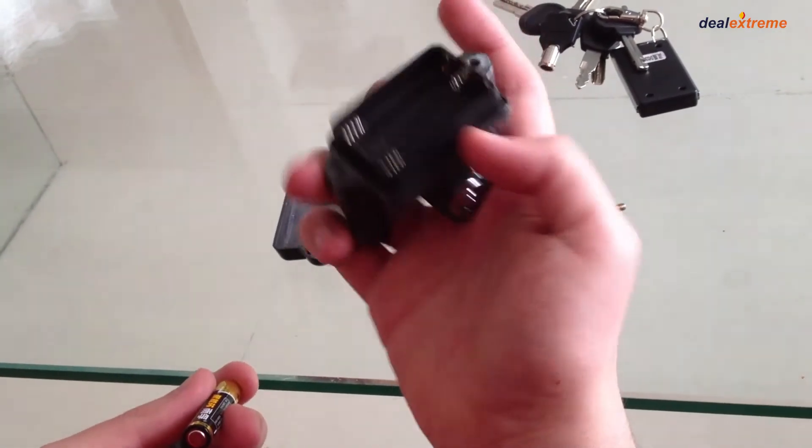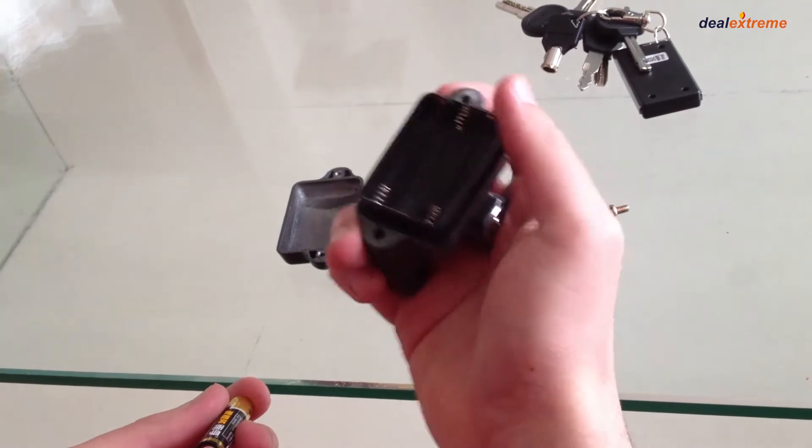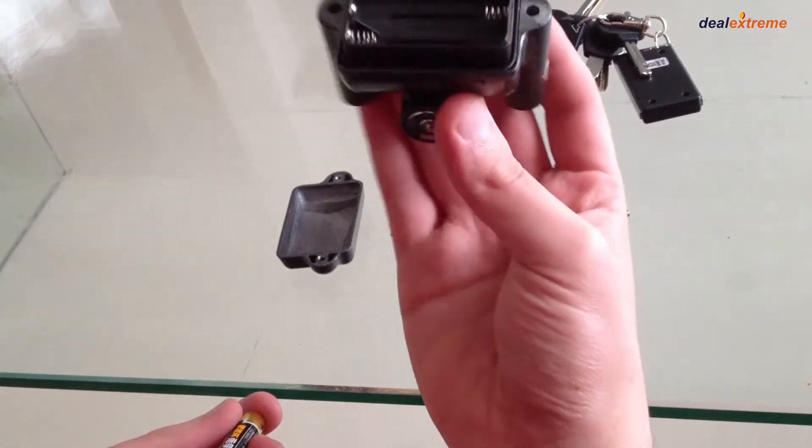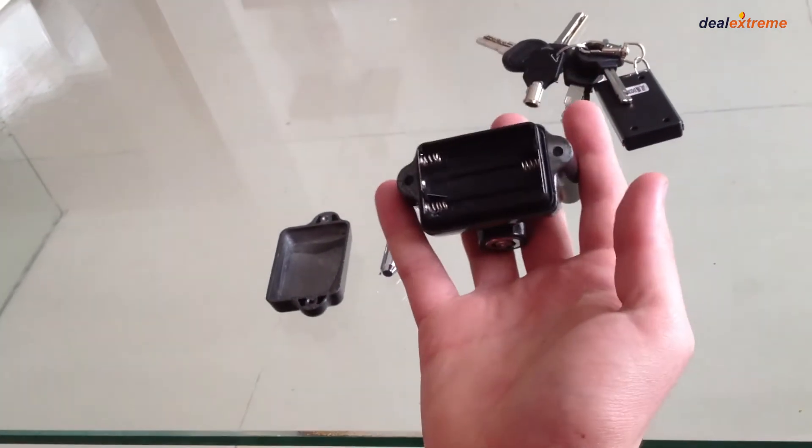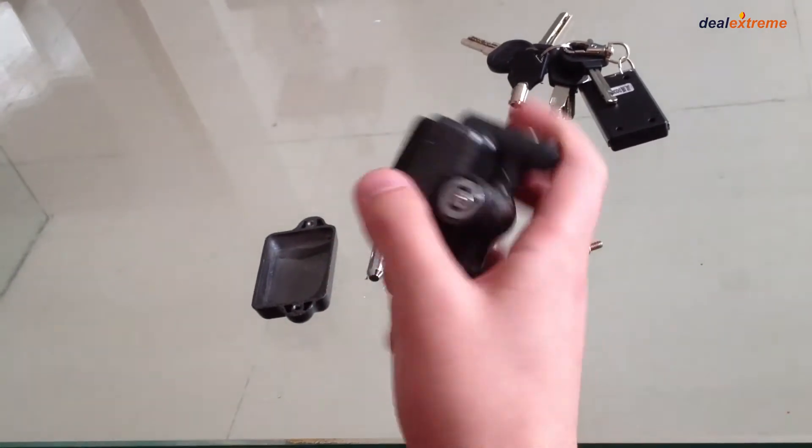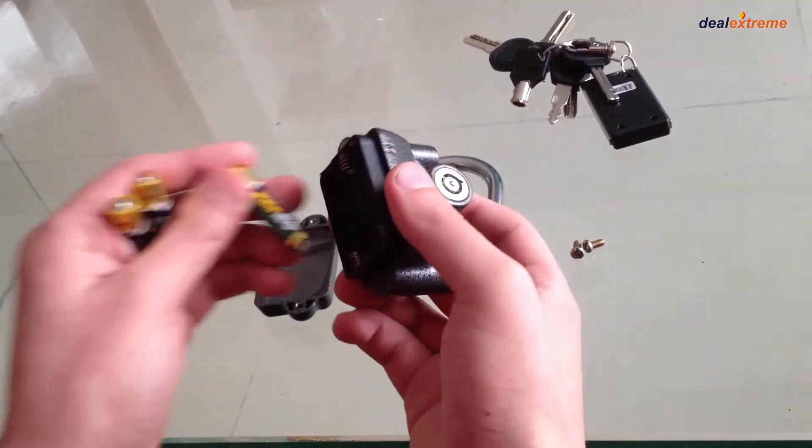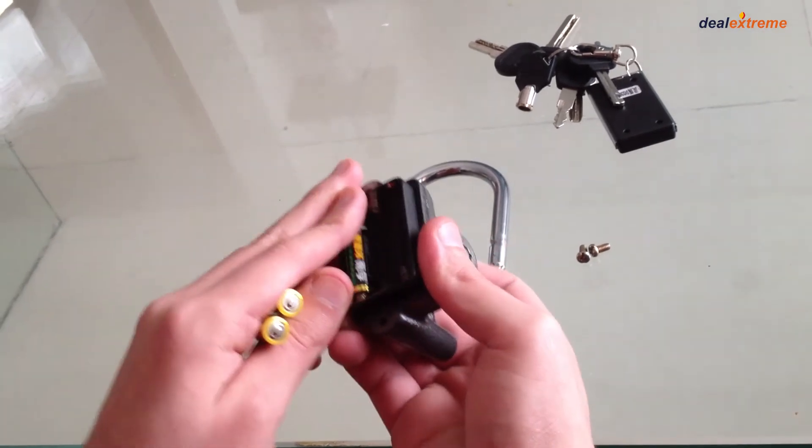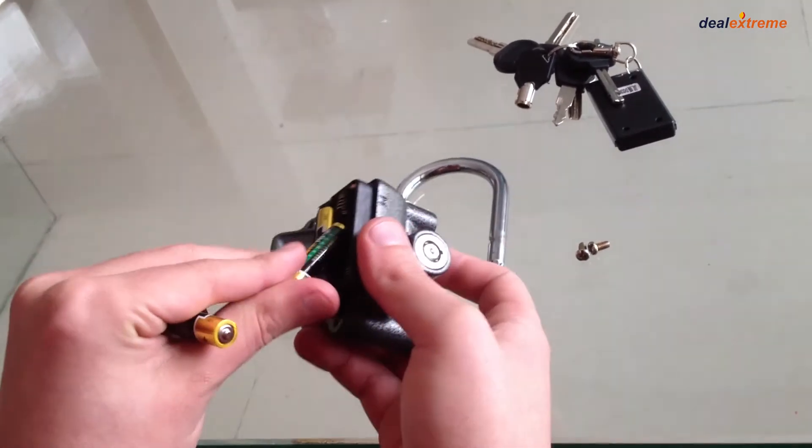You may ask why it has a place for AAA batteries. Easy, because it has an alarm, quite a loud alarm. We're going to show it right now. Okay, we place the...